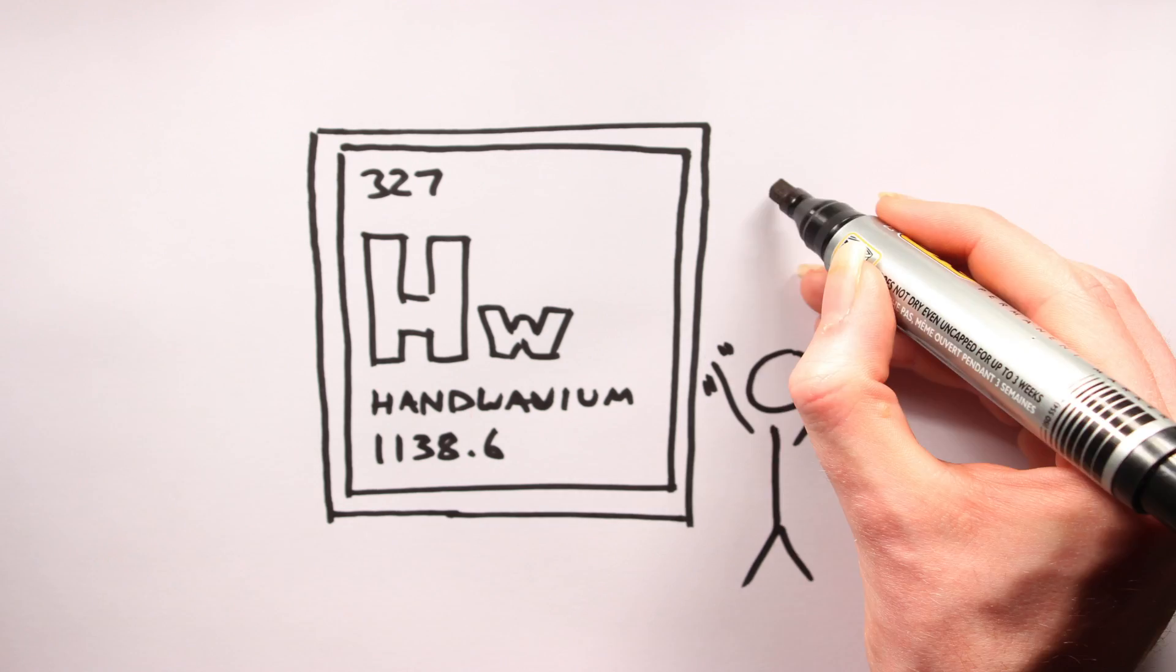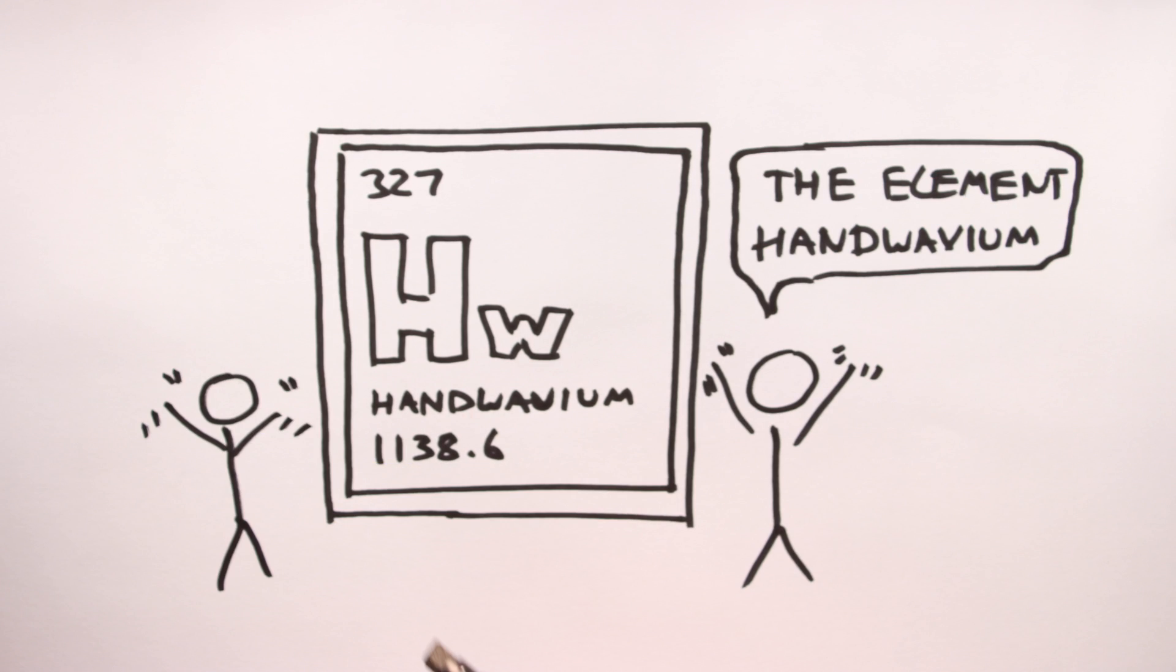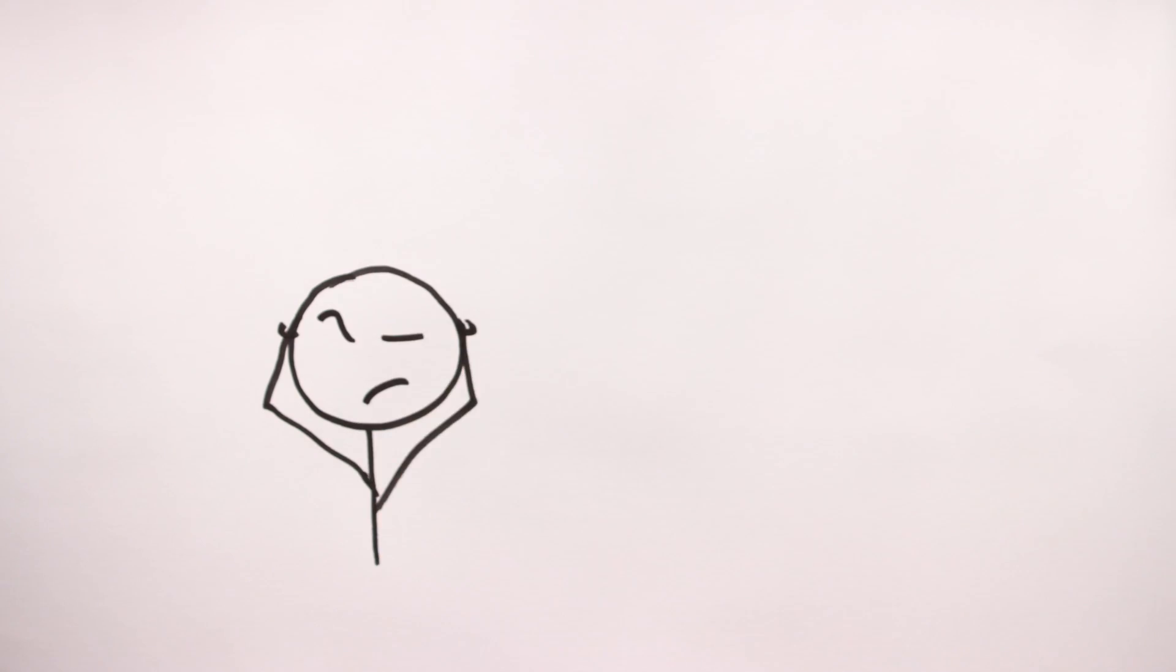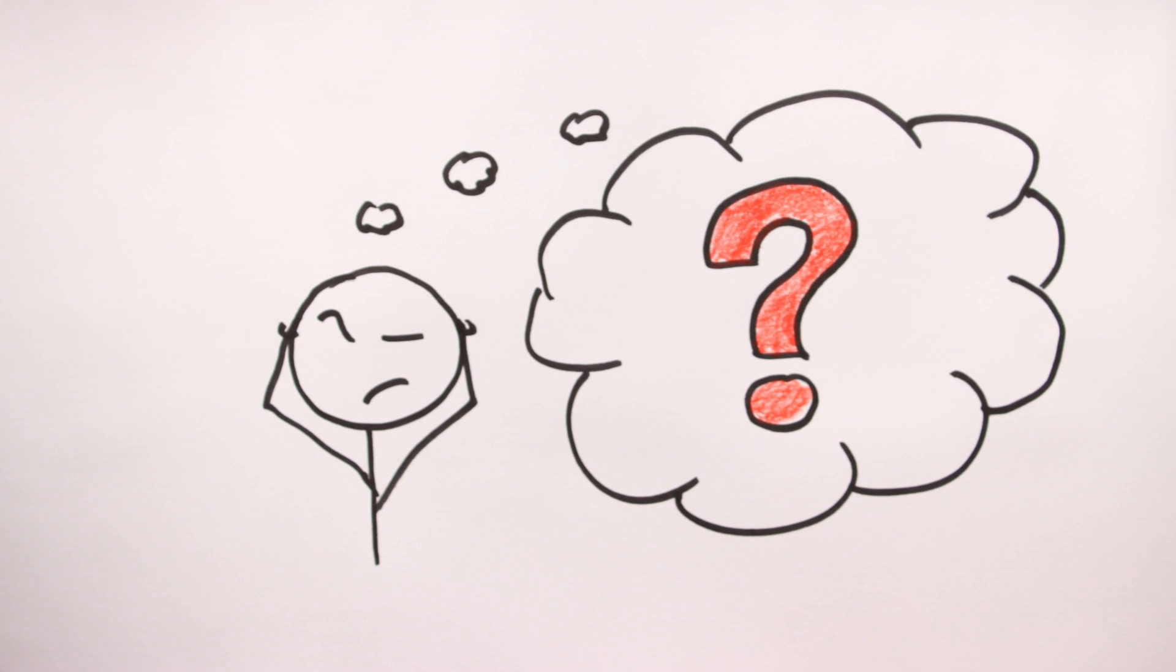However, let's get a little Star Wars here and use a dab of handwavium. Let's say your planet does exist within an ultra faint galaxy. Again, ask yourself, what would the local setting look like?